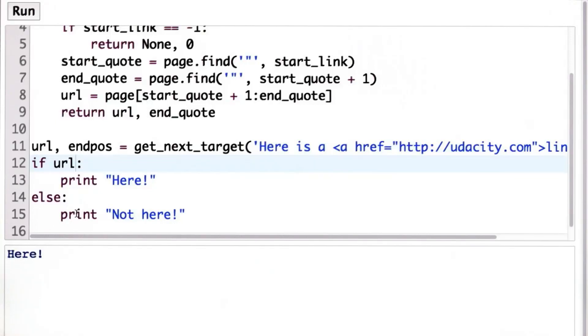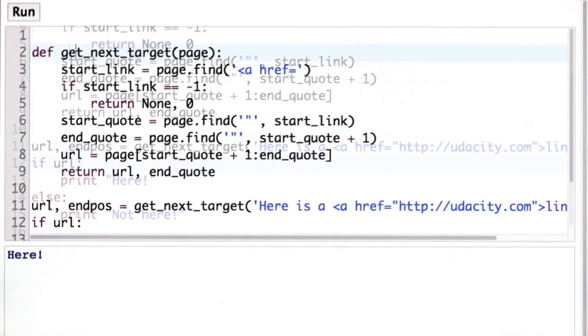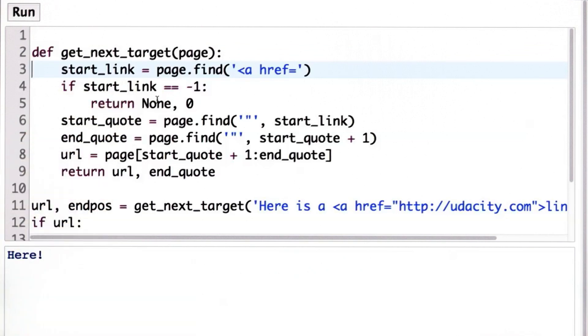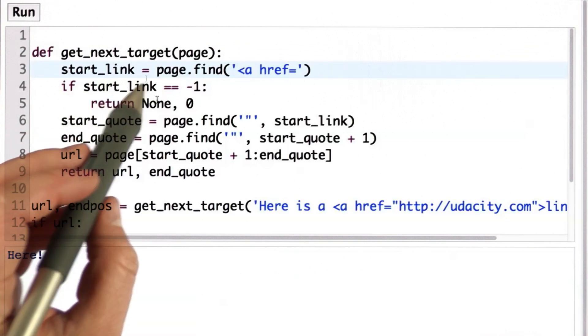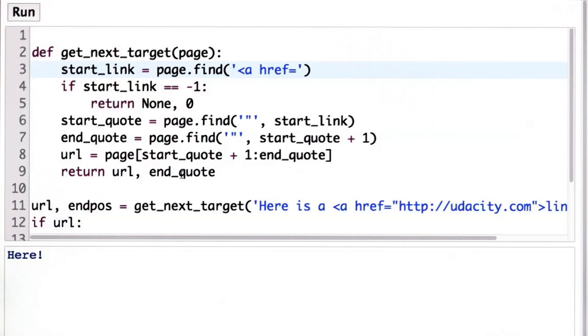So now we've modified our getNextTarget procedure, and it will return none as the first output if there's no next target. Otherwise, it will return the URL and the end quote.